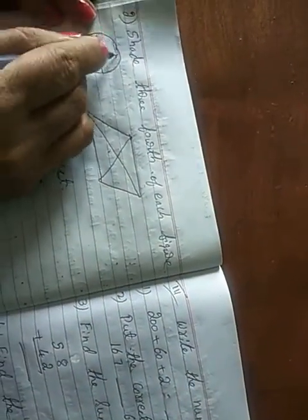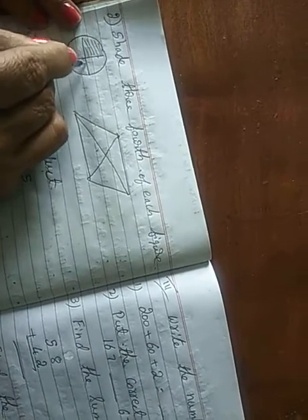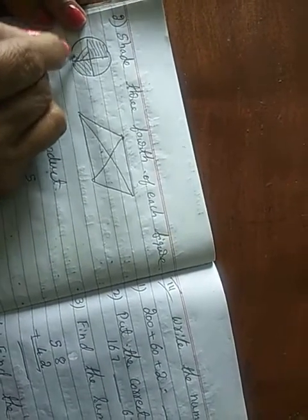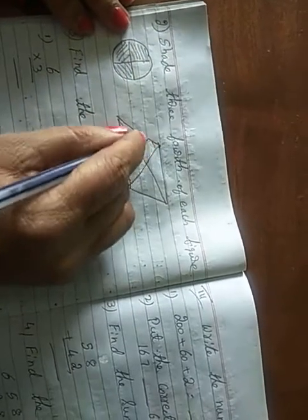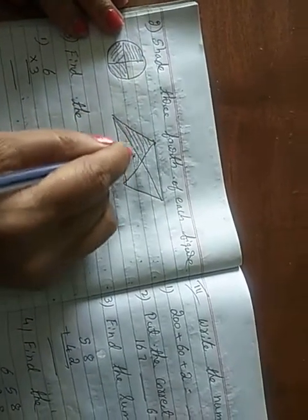Next, shade 3/4. How many boxes we have to shade? Three boxes. We should shade three boxes. That is shaded is 3, equal parts is 4. Here also you have to shade 3.